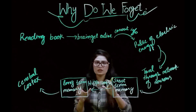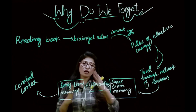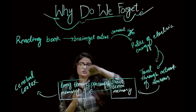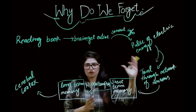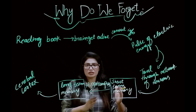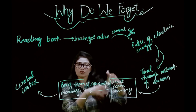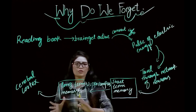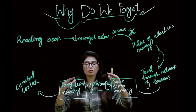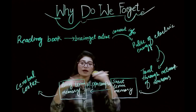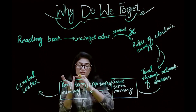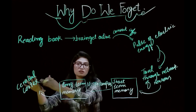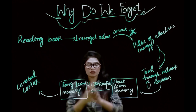From long-term memory, the information is sent into different areas of the cerebral cortex. So this is the short path of how information travels — starting from your brain, through pulses of electric energy, traveling through a network of neurons, going toward short-term memory, then long-term memory, and finally the cerebral cortex. This is how you remember and memorize things.